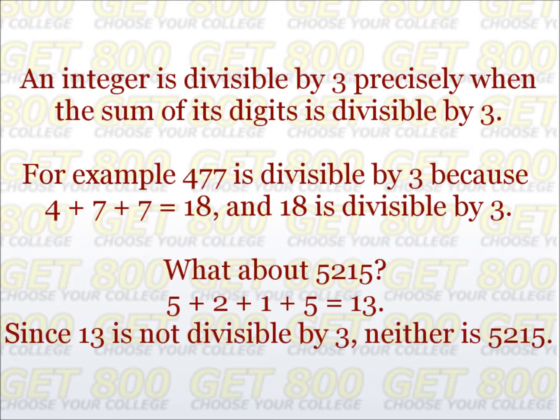An integer is divisible by 3 precisely when the sum of its digits is divisible by 3. For example, 477 is divisible by 3 because when you add up 4, 7, and 7, you get 18, and 18 is divisible by 3. How about the number 5,215? When we add 5, 2, 1, and 5, we get 13. Since 13 is not divisible by 3, the number 5,215 is not divisible by 3.